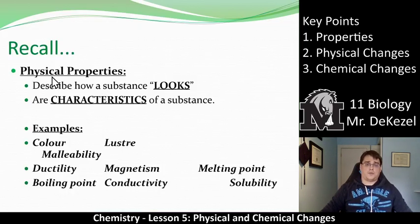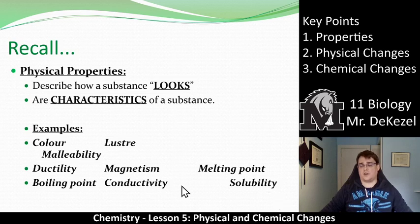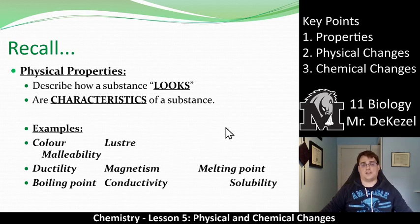Remember first: physical properties describe how a substance looks. They are characteristics of a substance — it doesn't matter how much of it there is, they have the same properties. So it might be color, luster, malleability, ductility, magnetism, the melting point, the boiling point, conductivity, and solubility. All are examples of physical properties. They don't have anything to do with reactions, no air, no water, no acids — it's just about the characteristics of that substance.